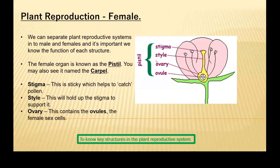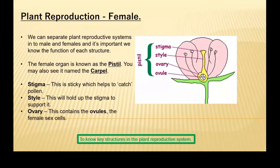First things first, we can actually separate plant reproductive systems into male and female. And it's quite important that we know the function of each structure. Now, the female organ is known as the pistil, but you may also see it named the carpal. More often than not, you're going to see the pistil.